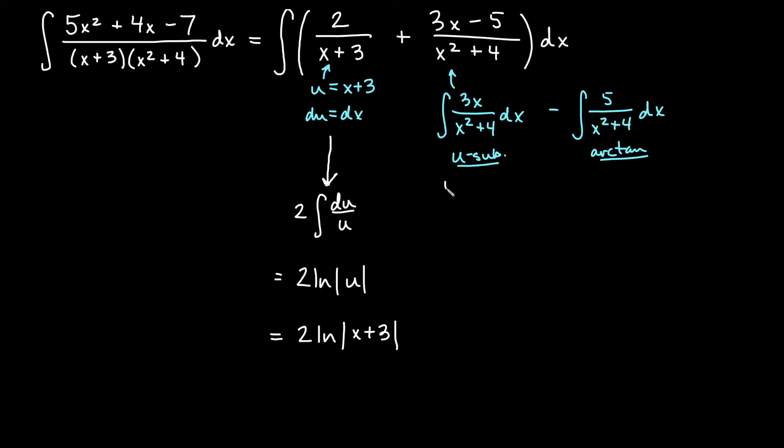For the next one, if I let u equal x squared plus 4, then du is 2x dx, and if I want to replace the 2 with a 3, so I end up with 3x dx, then I'm going to multiply both sides by 3 halves. So I will get 3 halves du is 3x dx, and then I know what I can replace 3x dx with.